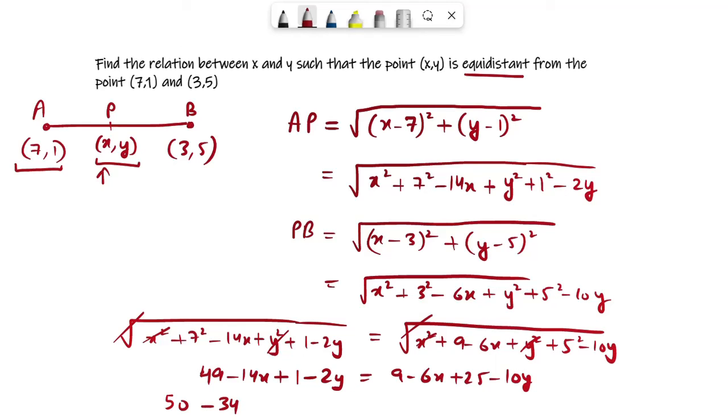That is minus 34. Then you have minus 14x minus 2y and minus 6x. Taking terms to the other side gives plus 6x, then plus 10y equals 0. So you have 50 minus 34, which is 16. Then minus 14x plus 6x gives minus 8x. Minus 2y plus 10y gives 8y.